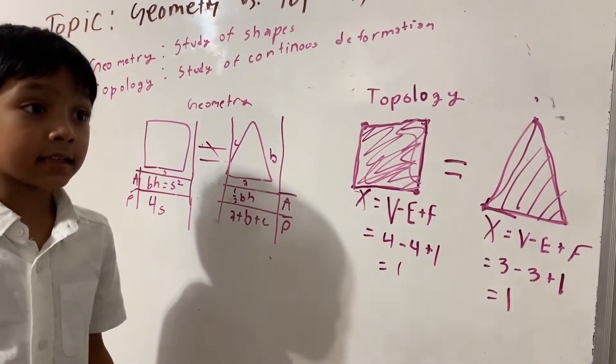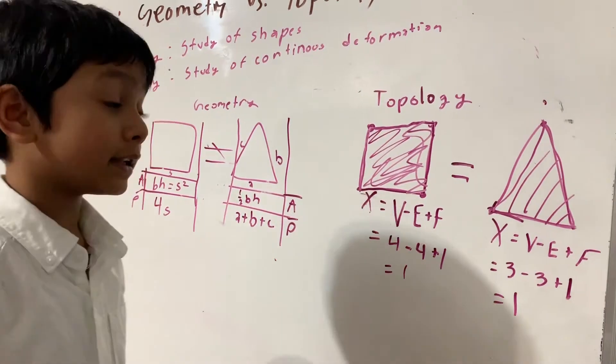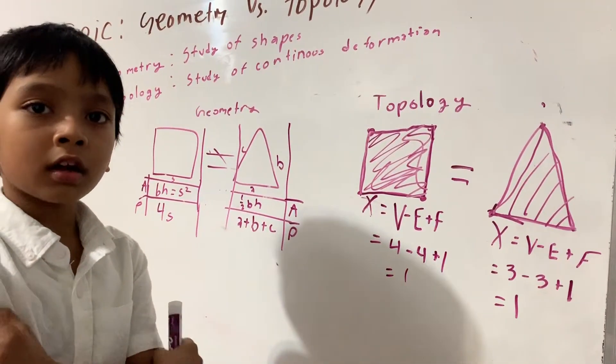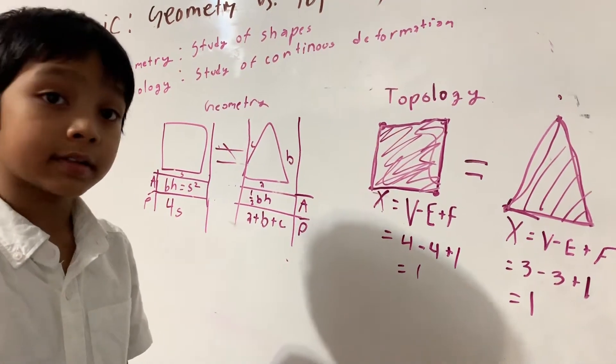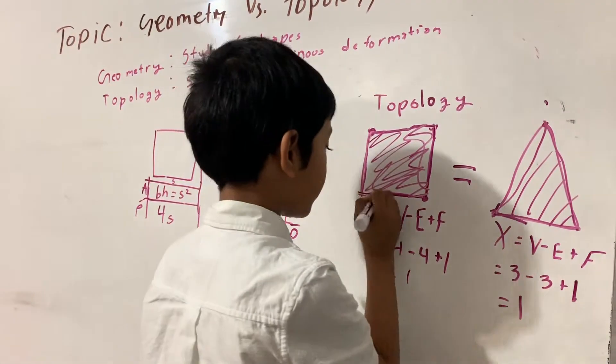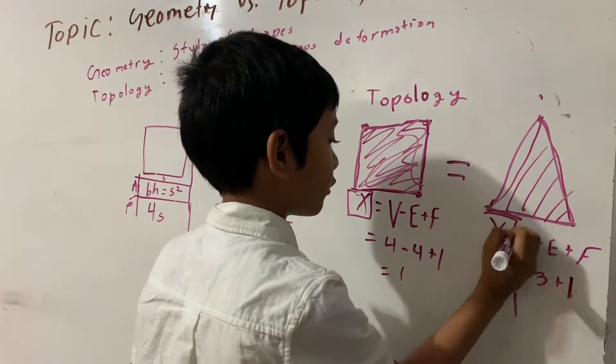So in the next upcoming video about topology, we will learn that not all shapes are the same topologically just because of their Euler characteristics.